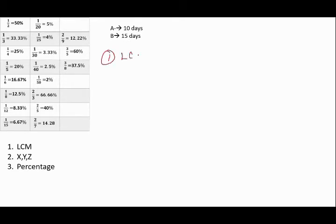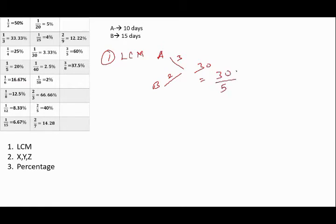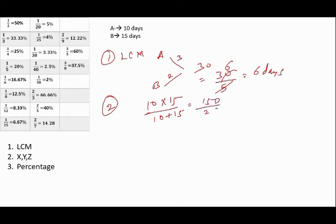Let's take a look at basic questions and a solution using all three methods. For the LCM method: A does a work in 10 days and B does the same work in 15 days. You have to first take out the efficiency for A and B — for A it will be 3, for B it will be 2. Then divide by their total efficiency, you get 6 days. In order to get this I almost used 10 seconds. For the fraction method, A×B / (A+B), it's still almost the same time — quite time-taking.